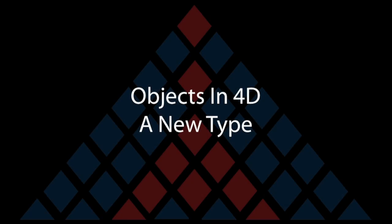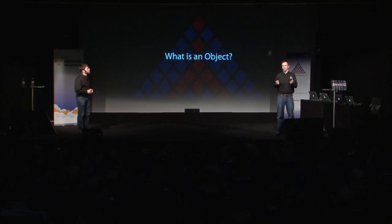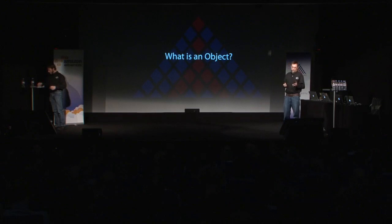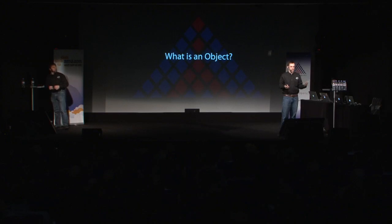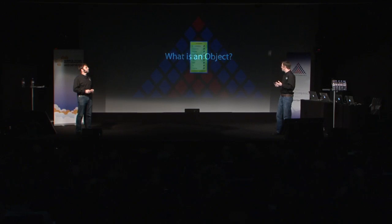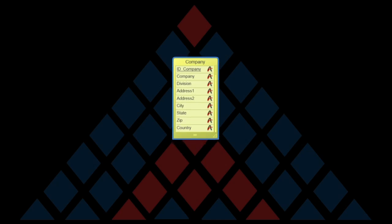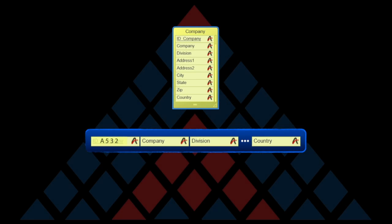We have a new language type in 4D: objects. So in a 4D context, what is an object? What I'm really asking first is, what do I want an object to be? If I'm going to have an object in 4D, how do I want it to behave? I'll define this using an analogy, in a way that makes sense to 4D developers. We're actually kind of comfortable with objects already in 4D — a record is an object. A record is a collection of variables bound together, and once you have data in those fields, it's a unique instance.